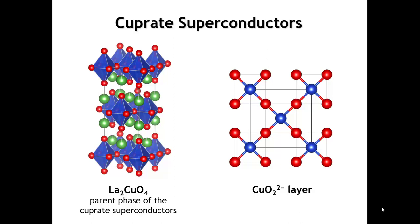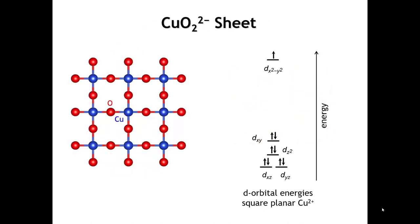If you look at the drawing on the left, you see an octahedral environment around the copper. But because this is copper 2+, we have a very pronounced Jahn-Teller distortion. The axial bonds that are in the same layer with the lanthanum cations are actually quite long. If we ignore those long bonds, we can think of the copper as just being in a square planar environment, and that's what we're going to do for the rest of today's lecture.